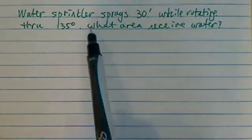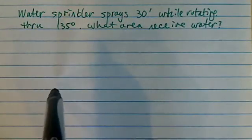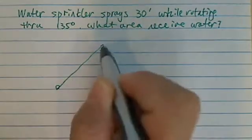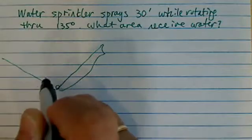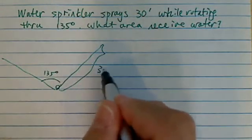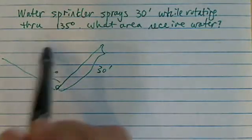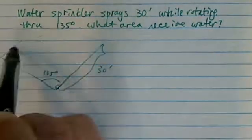Here's an interesting problem. We have a sprinkler that's spraying the water. It only sprays 135 degrees. It covers only 135 degrees and the radius is 30 feet. And we're asked what's the area the sprinkler can cover.